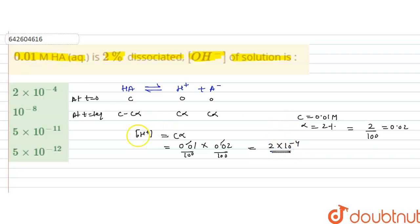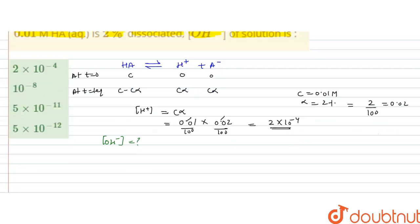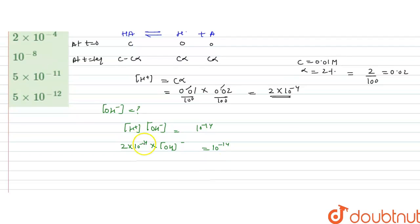Now this is the concentration of H plus ions. We have to calculate the concentration of OH negative ions. So this can be calculated as the concentration of H positive ions into OH negative ions in water, that is equal to 10 raised to the power minus 14. Now we have concentration of H plus ions. So we can calculate OH minus ions. This is 2 into 10 raised to the power minus 4 into OH minus concentration, that is equal to 10 raised to the power minus 14. So OH negative concentration will be 10 raised to the power minus 14 divided by 2 into 10 raised to the power minus 4.